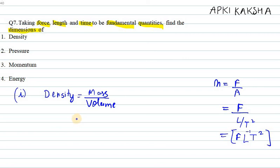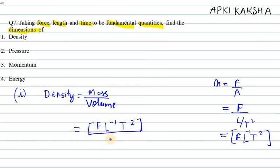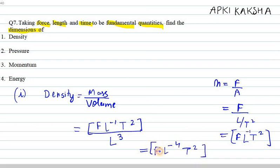Volume can be written as L cubed. Putting the values together: mass is FL⁻¹T², volume is L³. Dividing, the L terms give minus 1 minus 3 which is minus 4. So the dimension of density is FL⁻⁴T².